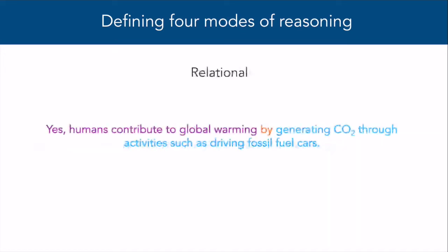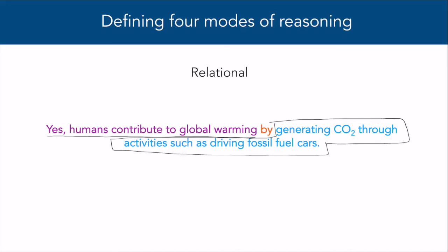The second mode is called relational reasoning. In relational reasoning, the claim and evidence are described, and this time there's a link between them that connects the two. However, there are no statements that describe why the evidence is relevant to or supports the claim. Example: yes, humans contribute to global warming by generating CO2 through activities such as driving fossil fuel cars. Here, the claim and evidence are connected by the word by, establishing a connection between those two ideas, but no further explanation is provided.